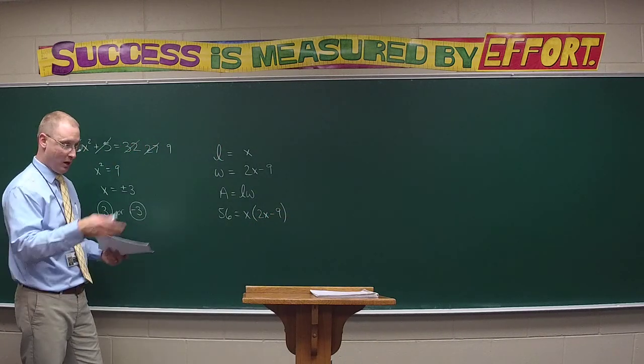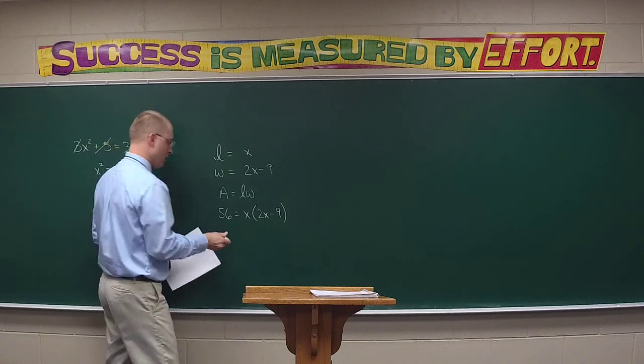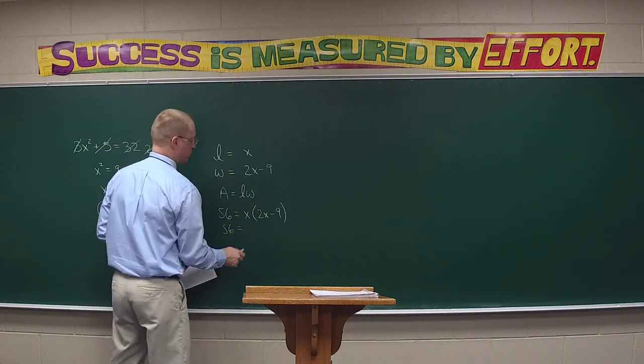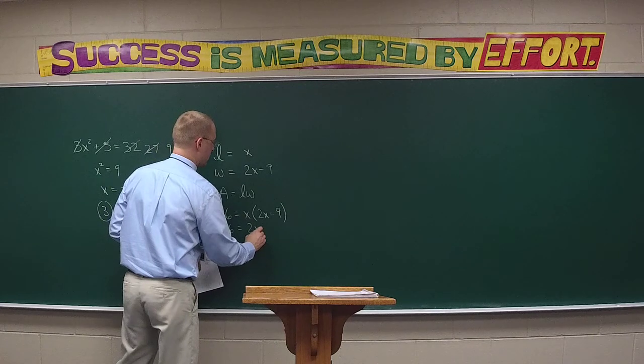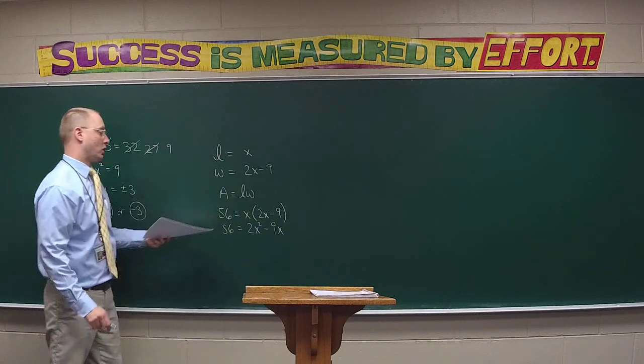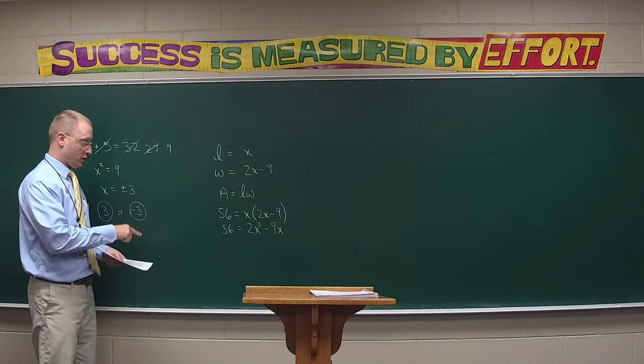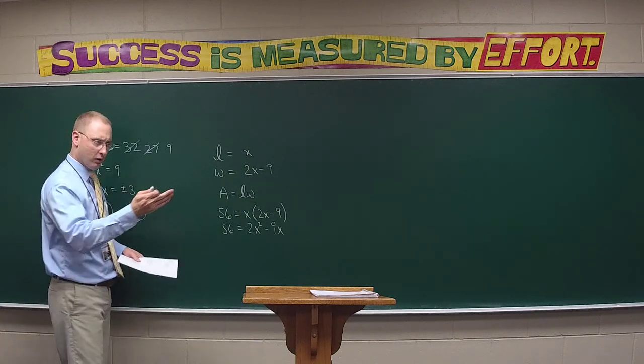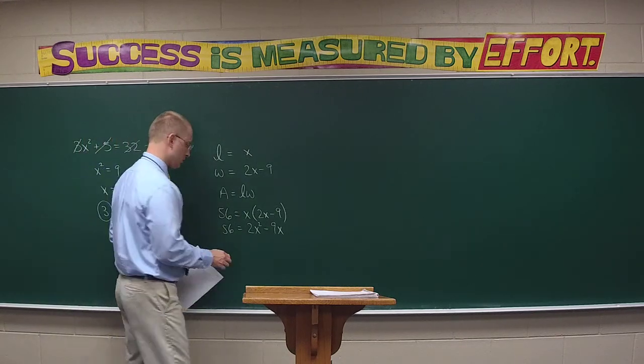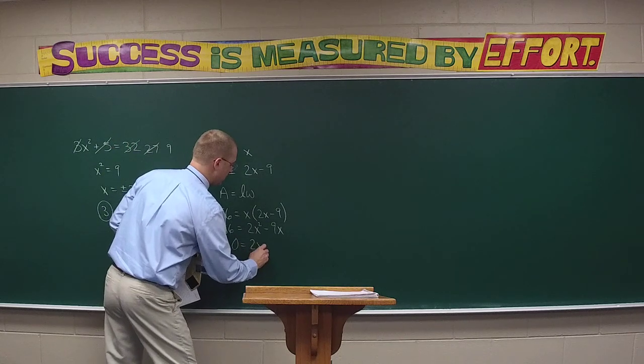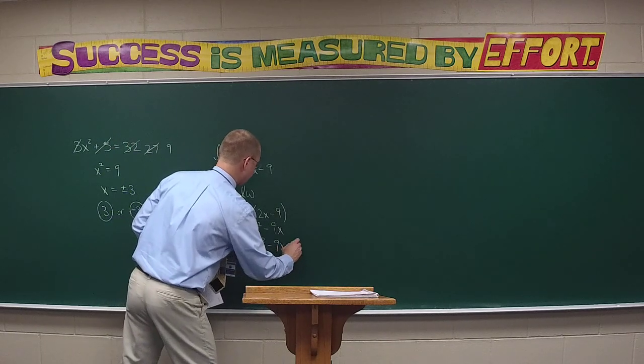In place of the area, we plug in 56. In place of the length, x. In place of the width, 2x minus nine. What do we do now, Brandon? Distribute the x to get 56 equals 2x squared minus 9x.